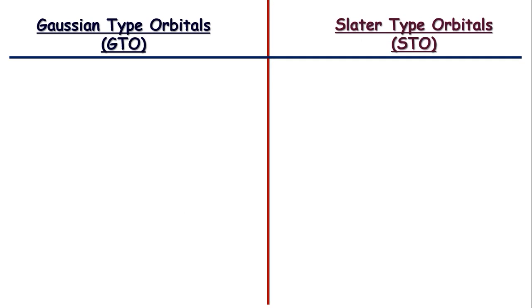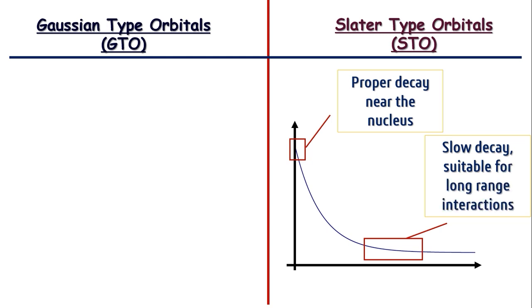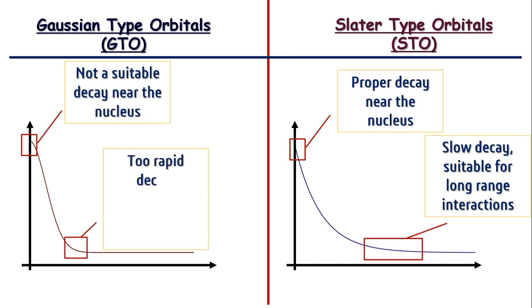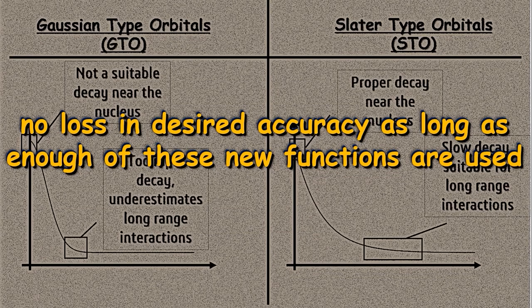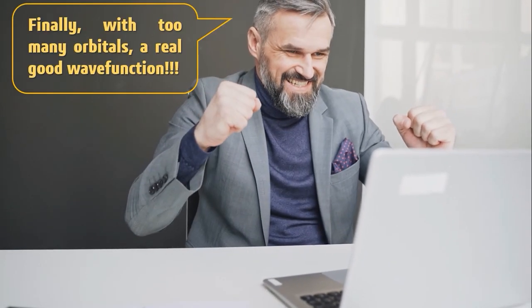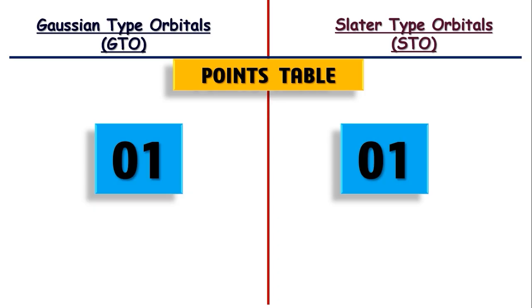That's okay. But remember that Slater type orbitals always have the correct functional behaviour near the nucleus. Gaussian type orbitals provide a relatively poor description of the atomic orbitals — they have a finite value at the nucleus and decay too quickly, and thus underestimate long-range interactions. However, despite these deficiencies, in both cases there is actually no loss in desired accuracy as long as enough of these functions are used, such that there is an adequate description of the final molecular orbitals.